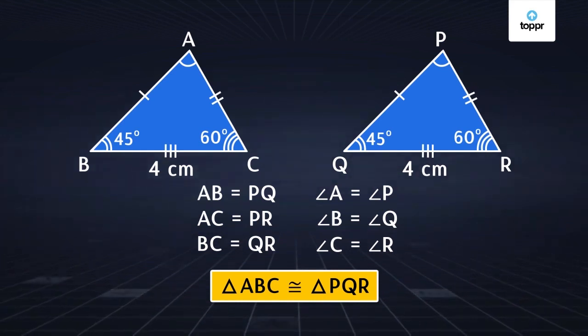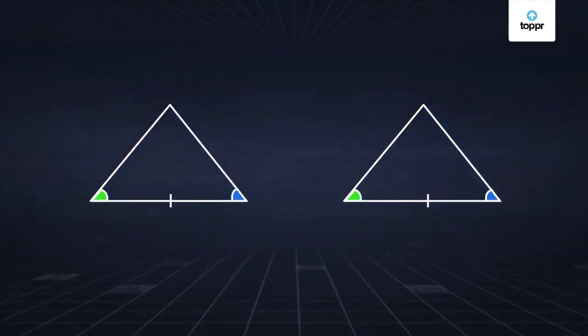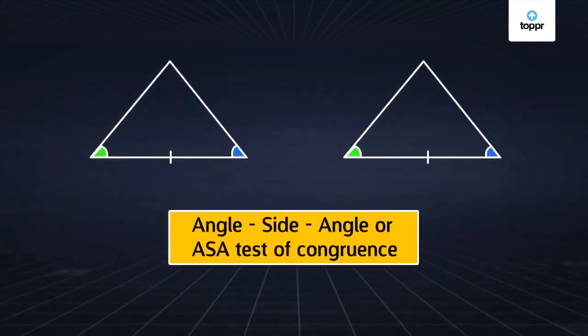So we can say that if two angles and the included side of two triangles are equal, then the two triangles are congruent. And we call this the ASA test of congruence.